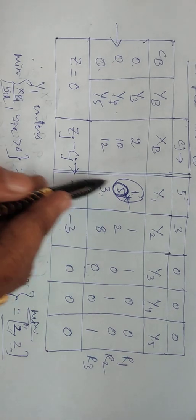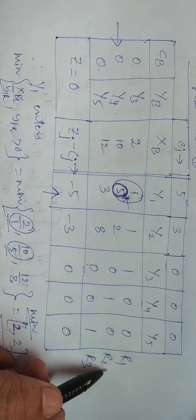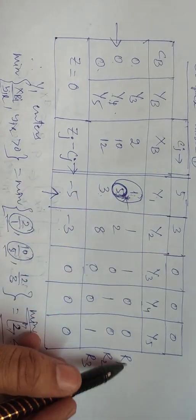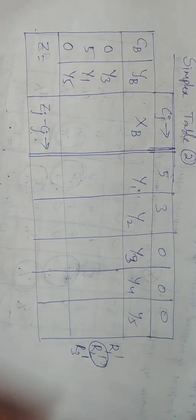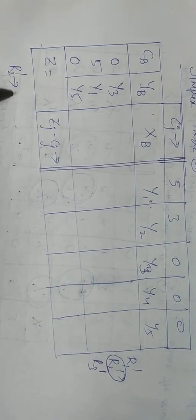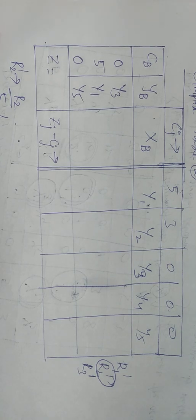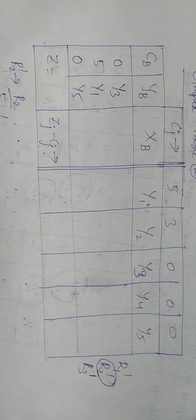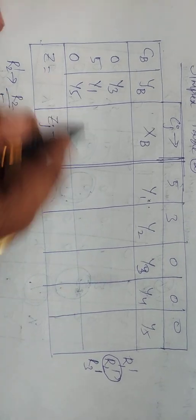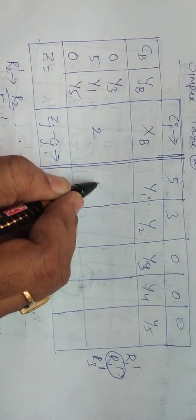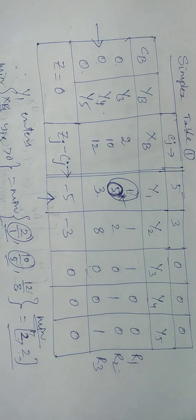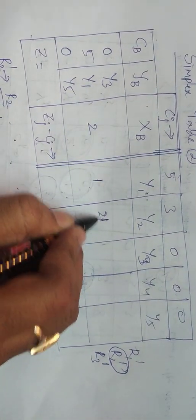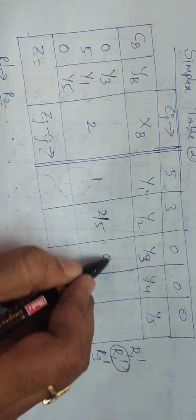In Simplex Table 2, we convert the pivotal element 5 to unity 1 in R2, and convert 1 and 3 in R1 and R3 to zeros. The first operation is R2 dash = R2 divided by 5. The elements become: 10/5 = 2, 5/5 = 1, 2/5, 2/5; for Y3 it is 0, 1/5, 0.